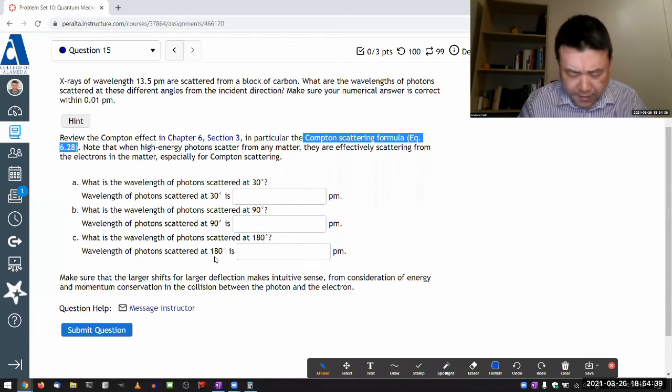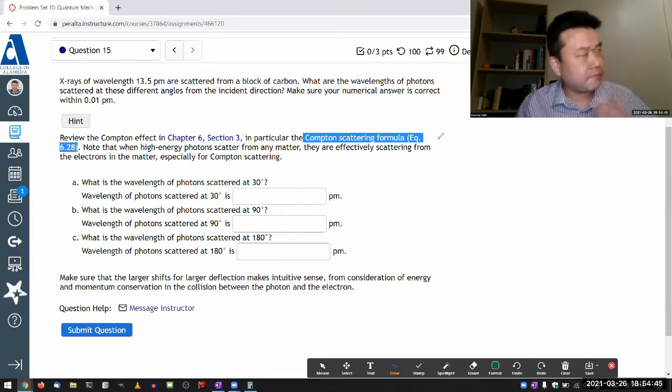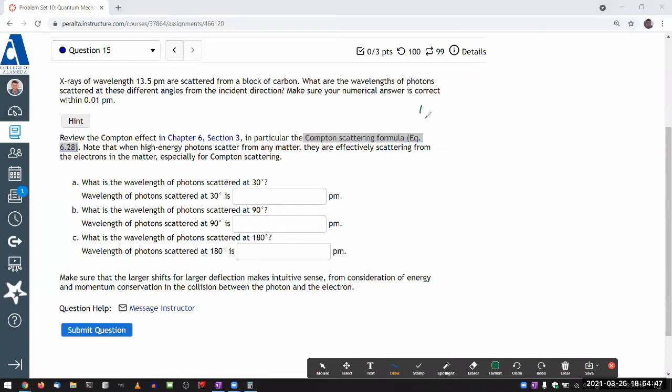So I think from writing it down earlier, I memorized enough of it. Let me just try to write it down. And I think this is the formula: lambda prime minus lambda, which you could call change in the wavelength, is equal to H over MC.